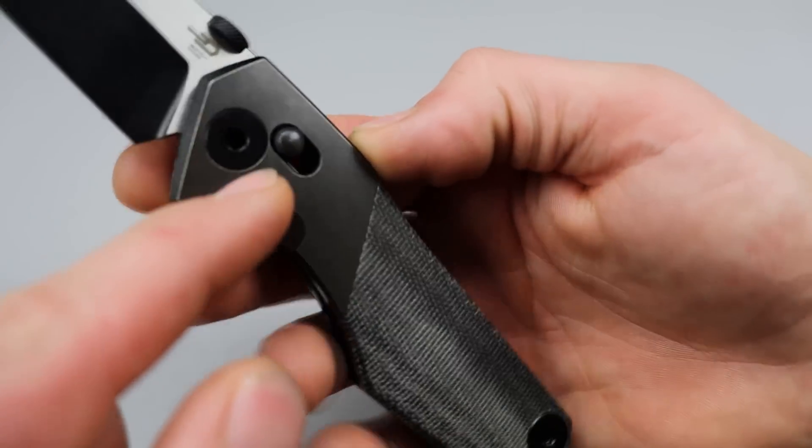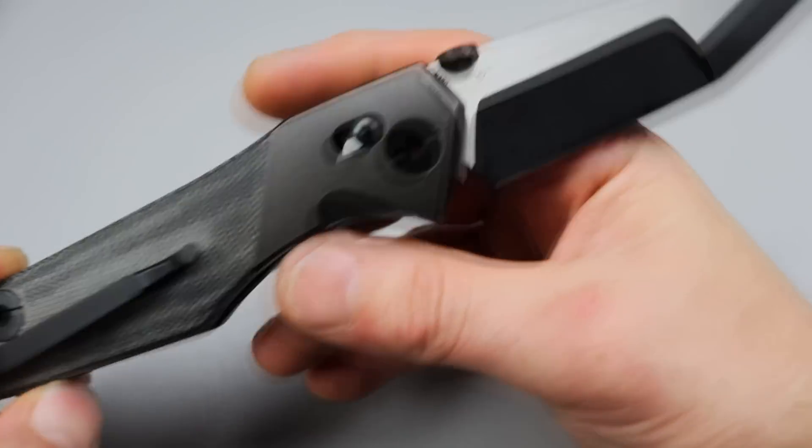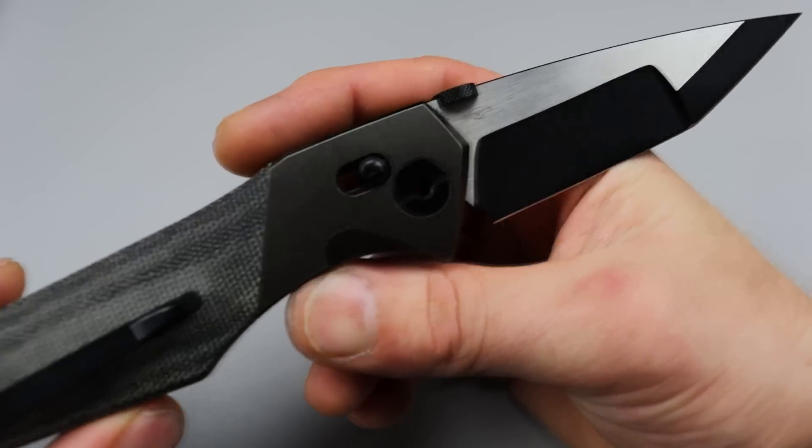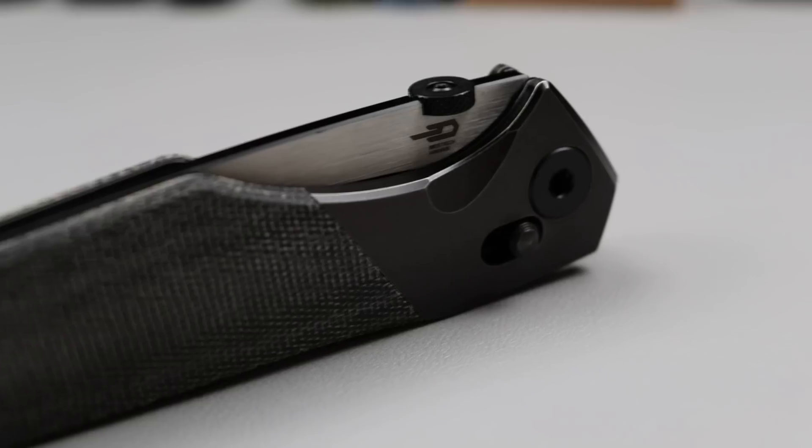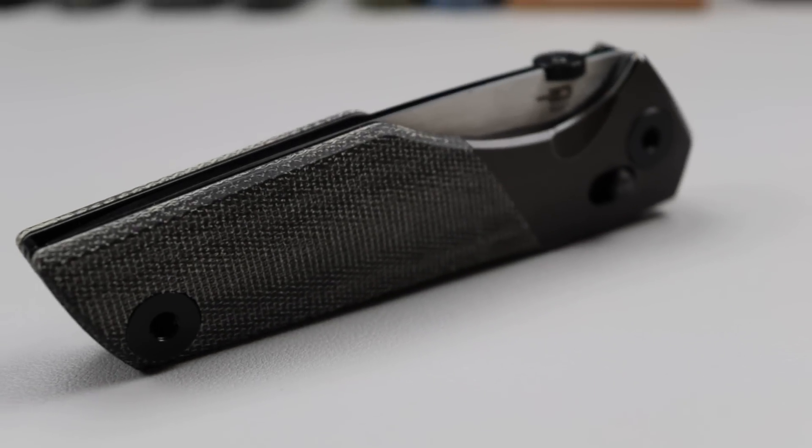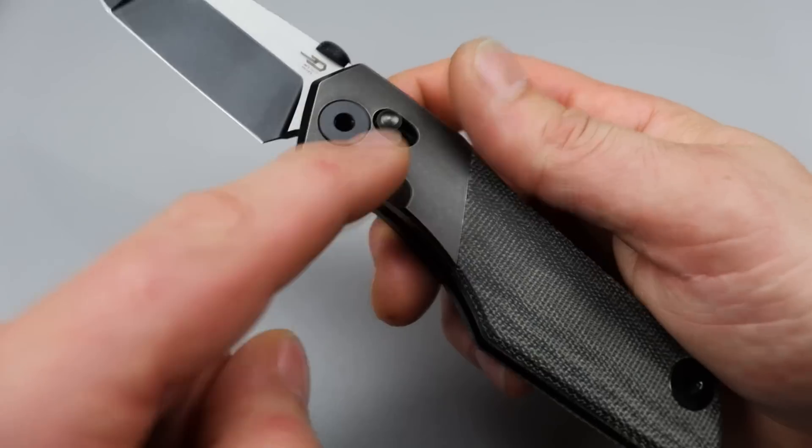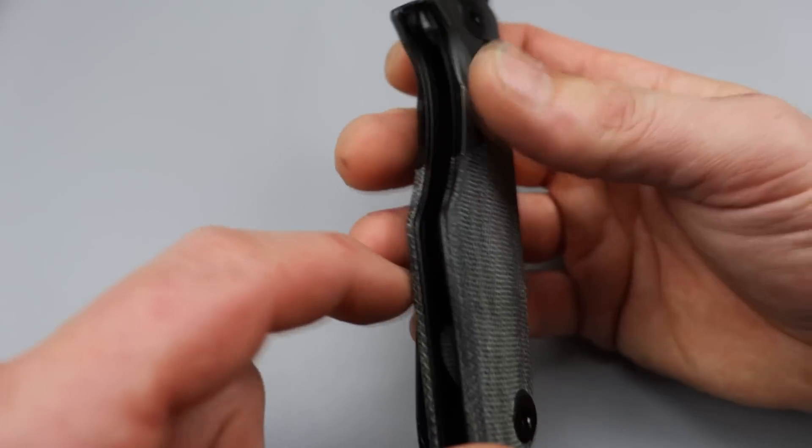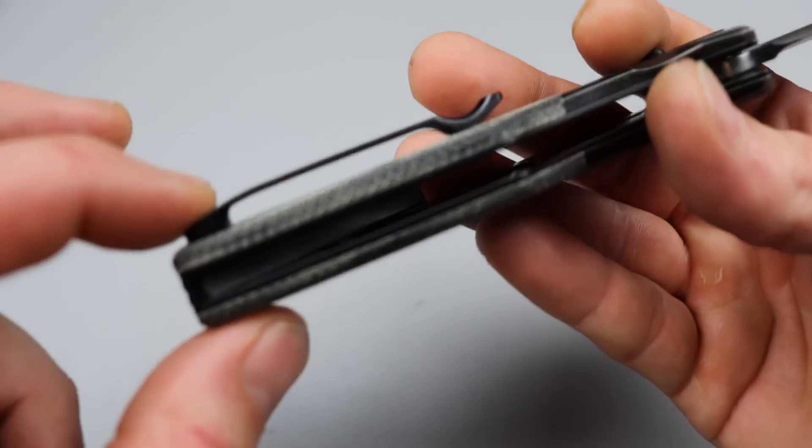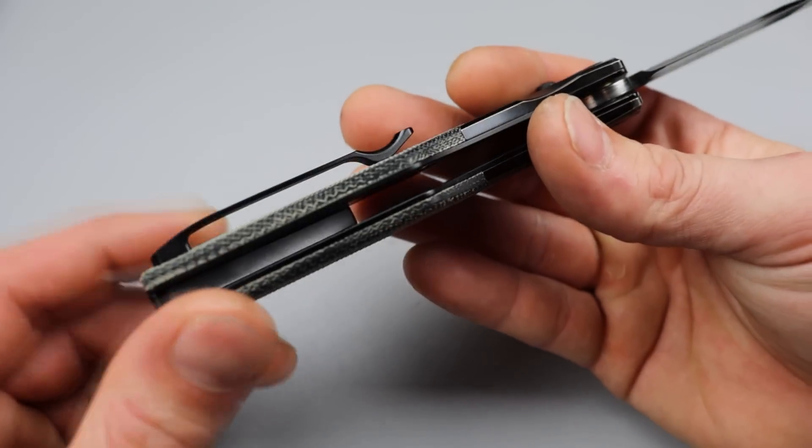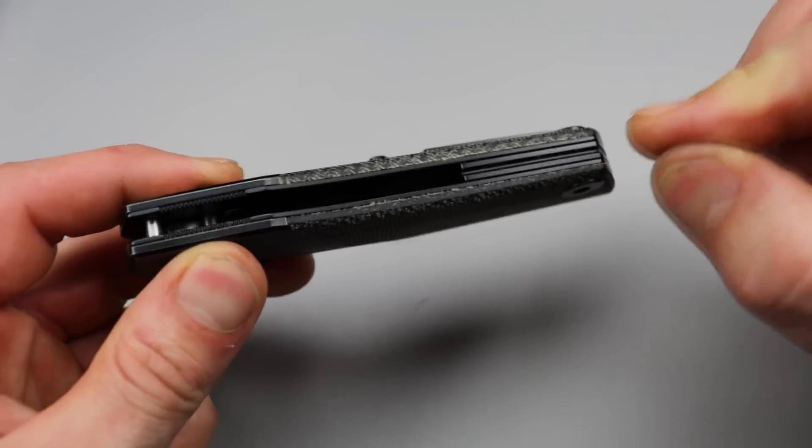It does have the big hardware that we expect from Poltergeist Designs because it is a Poltergeist design. It is a titanium bolster. Not a bolster lock, but a bolster knife, because it's got the titanium bolsters with really good quality micarta. And this titanium milled pocket clip that's also a pretty deep carry clip works great.